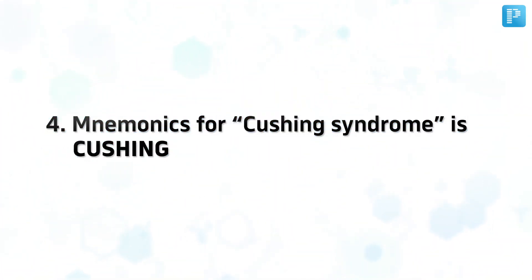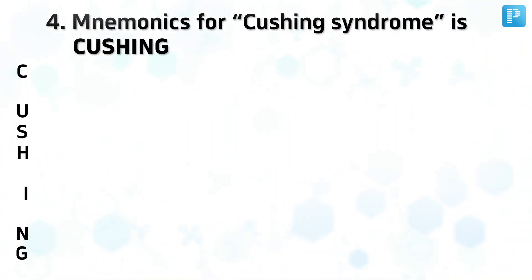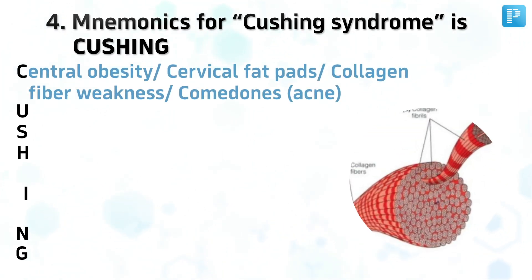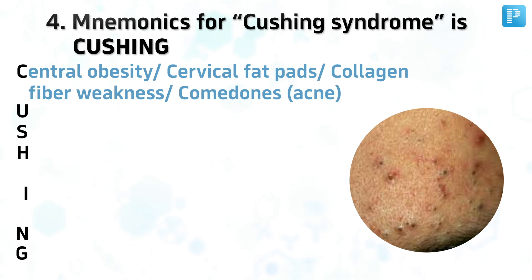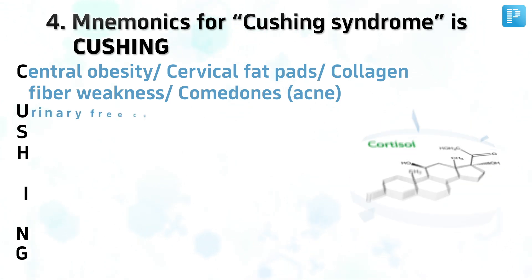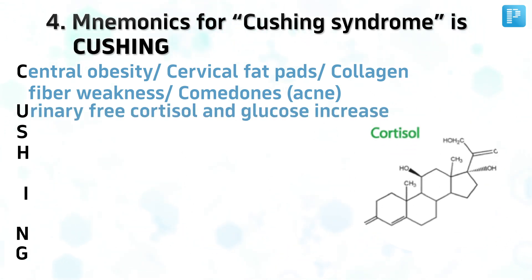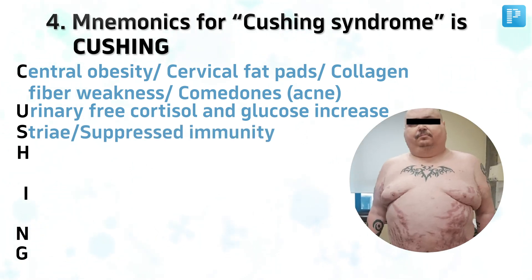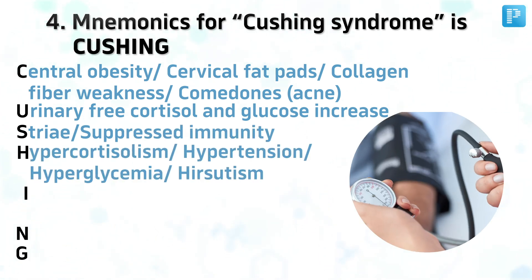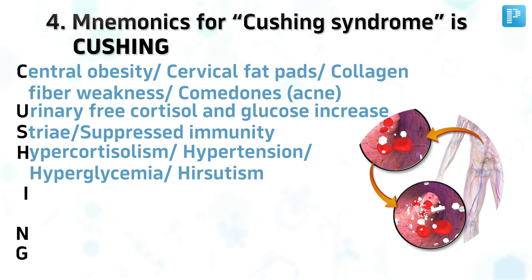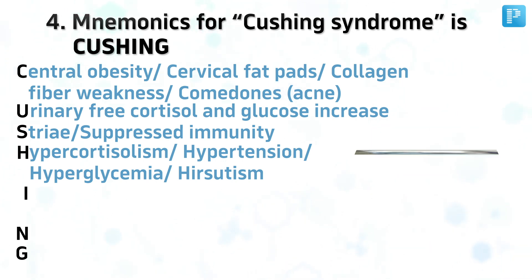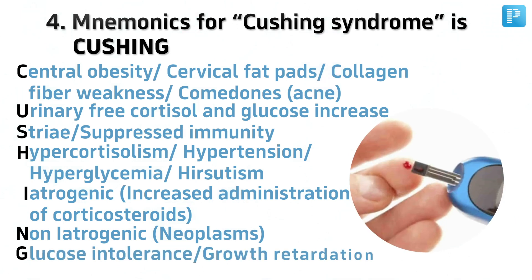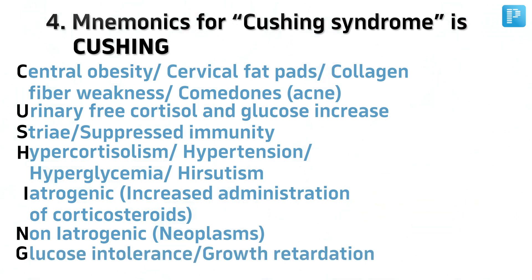Number 4. The mnemonic for Cushing syndrome is CUSHING: Central obesity, cervical fat pads, collagen fiber weakness, comedones; Urinary-free cortisol and glucose increase; Striae, suppressed immunity; Hypercortisolism, hypertension, hyperglycemia, hirsutism; Iatrogenic, non-iatrogenic, glucose intolerance, growth retardation.